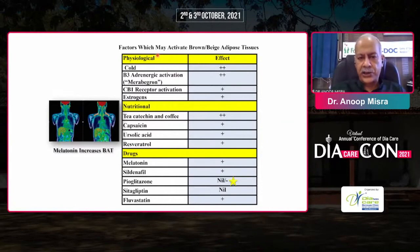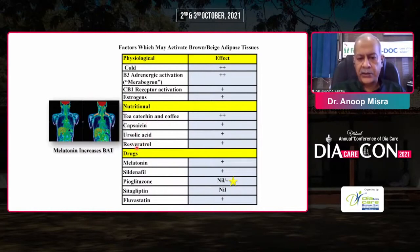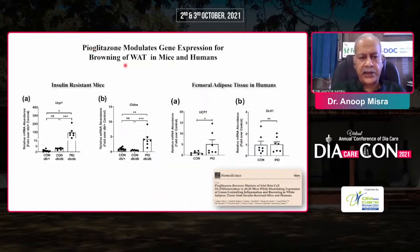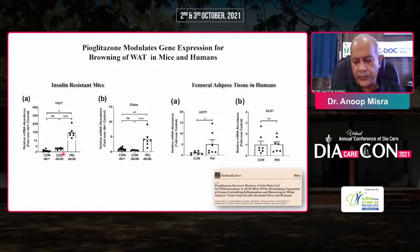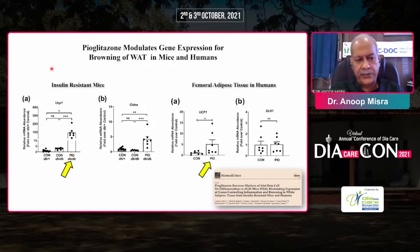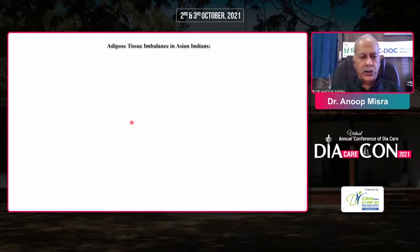A number of factors activate brown and beige adipose tissue: cold, beta-3 adrenergic activation, endocannabinoid receptor activation, estrogens, nutritional factors like tea, caffeine, coffee, capsaicin, ursolic acid, and resveratrol. Drugs are disappointing — melatonin, sildenafil, sitagliptin, and pravastatin do not do much. However, in a recent study published a couple of days ago, we showed in mice and in human adipose tissue that pioglitazone increases gene expression for browning of VAT and increases UCP1. So pioglitazone increases UCP1 both in mice and in humans.